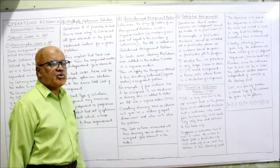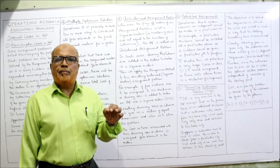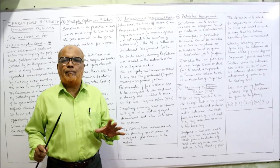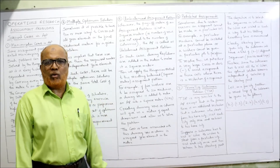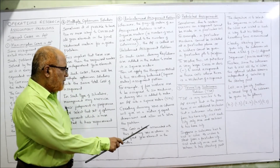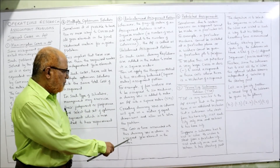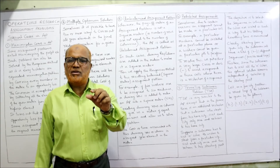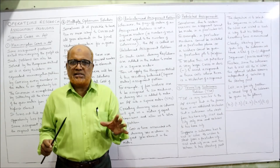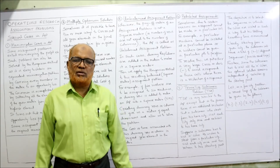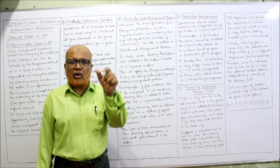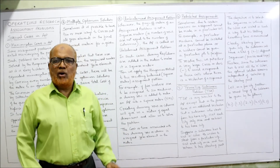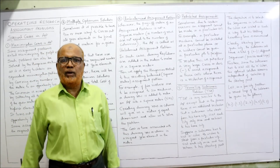It is a prerequisite that before applying the Hungarian method we ensure the problem is balanced by adding either a dummy row or dummy column. The cost or time associated with this dummy row or dummy column is assigned zero values. When we add a dummy row, all the cost elements in its cells should be taken as zero — either in the dummy row or dummy column, all values are zero. This is all about unbalanced problems, and these concepts will be applied while doing the actual problems.